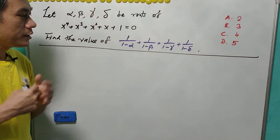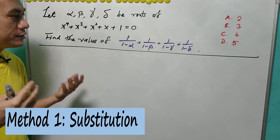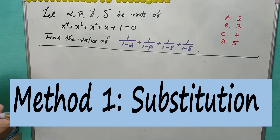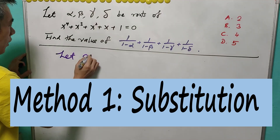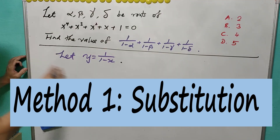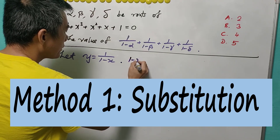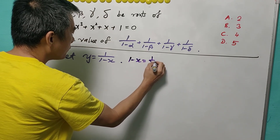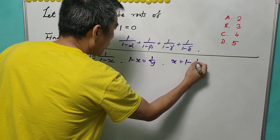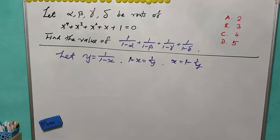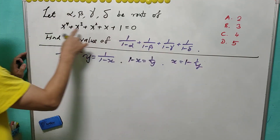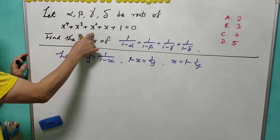Method 1 is the usual method I receive from most responses. We let y = 1/(1−x). Therefore, 1−x = 1/y, and x = 1 − 1/y. We'll plug in x as 1 − 1/y inside the equation.